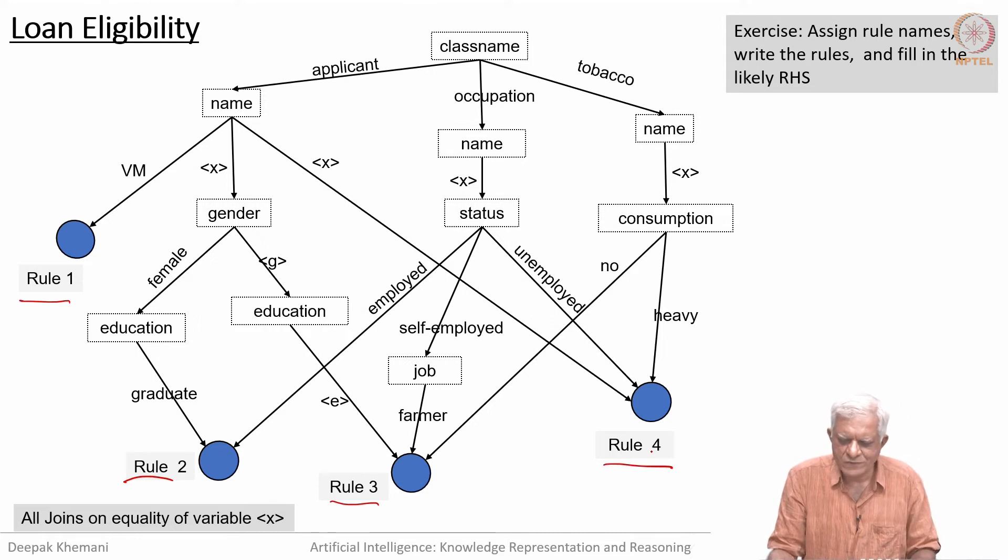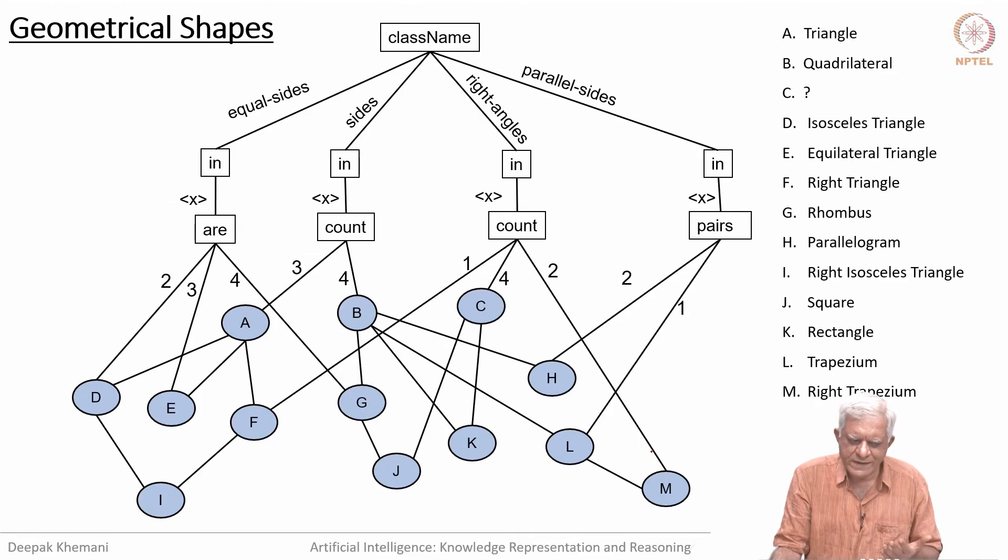Here is another one which talks of loan eligibility. We have not given the names. There are four rules; give appropriate names and write them down as rules. This is a small system with four rules; express them in OPS5 language so that this network represents them.